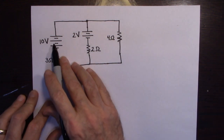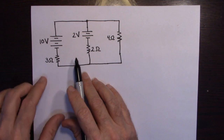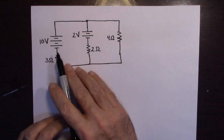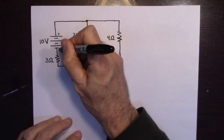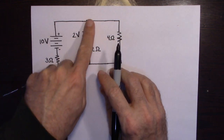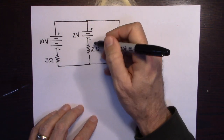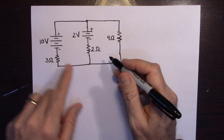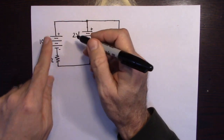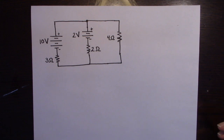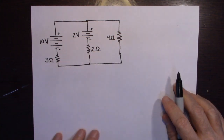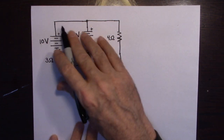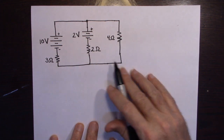We have two batteries, a 10 volt and a 2 volt. This battery is trying to push the current this way. If we go with the conventional flow of current, this battery is trying to push the current that way. And we have 3 ohms, 2 ohms, and 4 ohms. The problem wants you to find the current in all the branches — the current in this branch, this branch, and that branch.